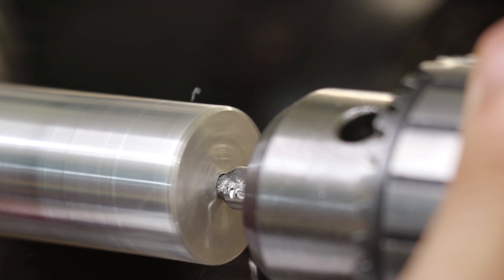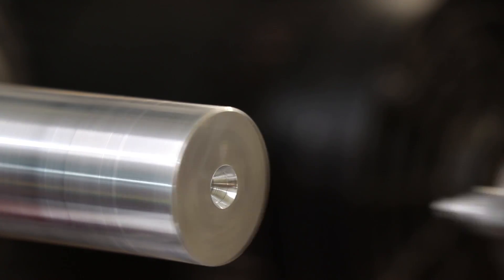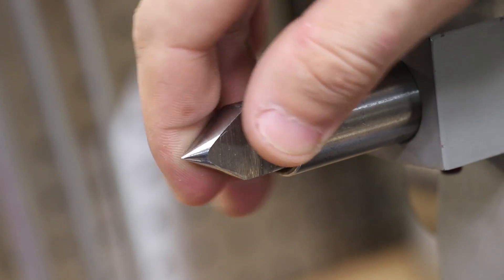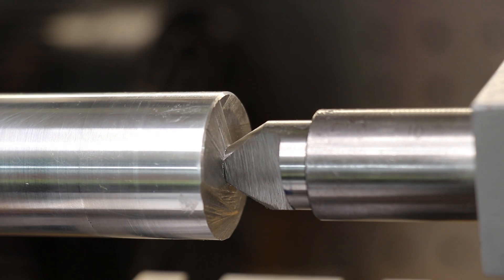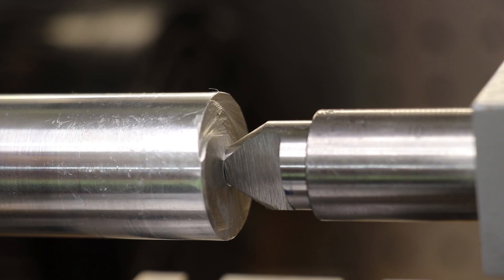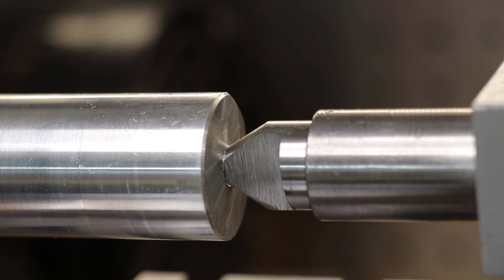I drilled out a center hole and loaded the center into the tailstock. As you can see, there's now a small gap between the work and the center, and this should allow me to face the part.